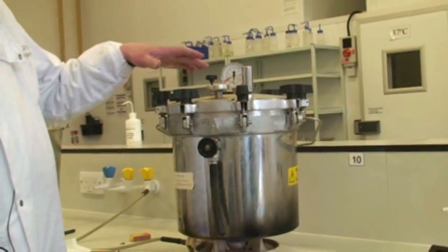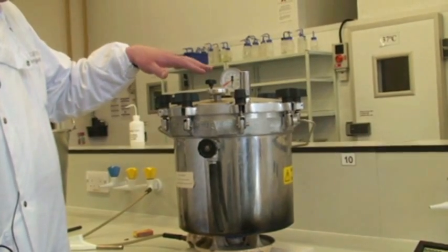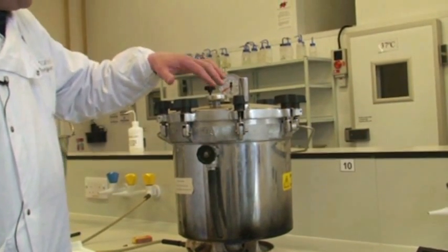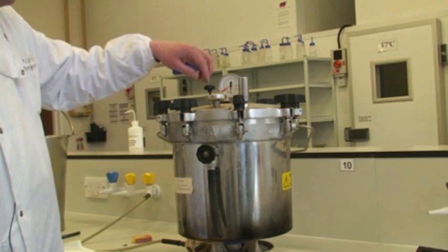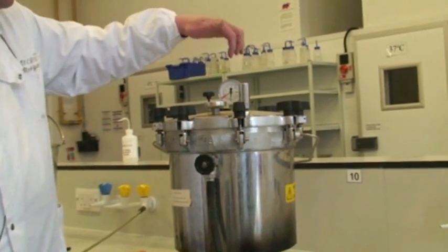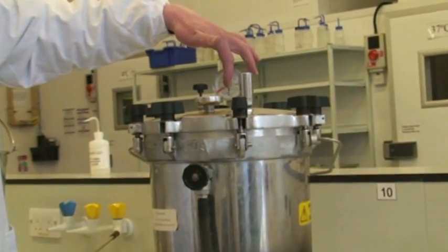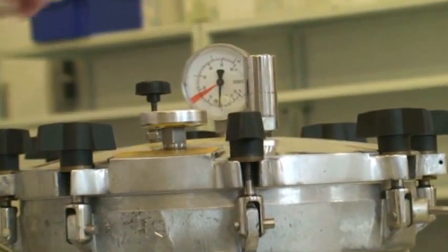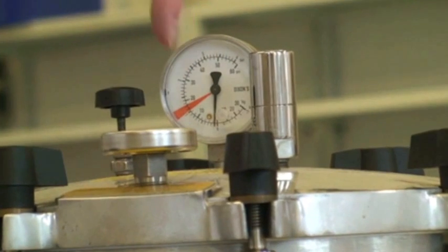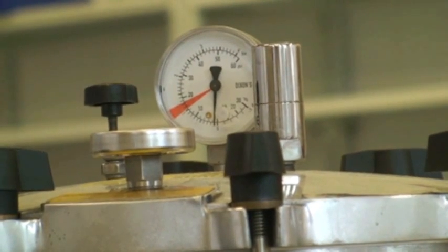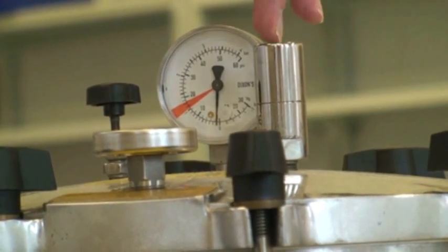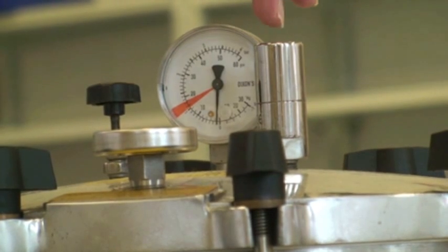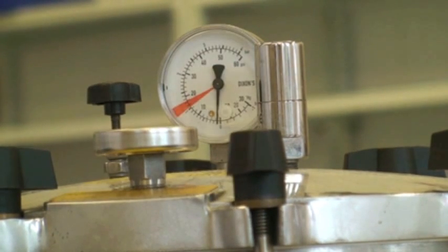Once you've had a couple of minutes of 100 degrees, you can then close this valve. Then this pressure gauge will go up as the pressure inside the autoclave goes up to 121. At this point, the steam will be released out of this gauge which will control the pressure inside the autoclave.